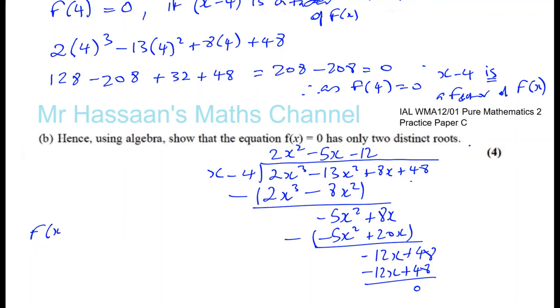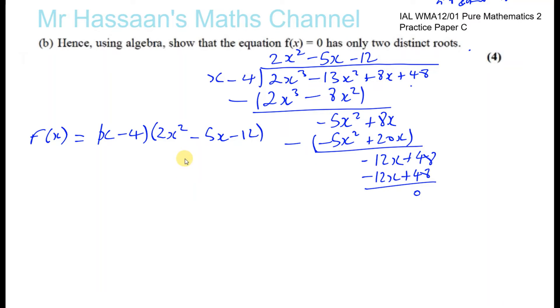So f(x) can be written as (x - 4) times (2x² - 5x - 12). And basically, if there are two distinct roots, then that means that's one root, x equals 4. And here, that means there should be one root from these two. So maybe we're going to have a repeated root. Let's have a look. So let's try to factorize 2x² minus 5x minus 12 and see what we're going to get from that.